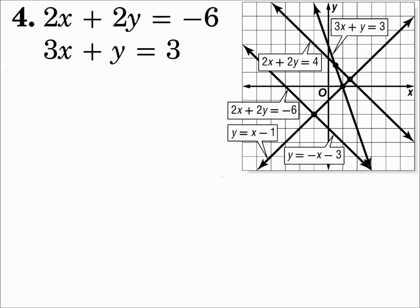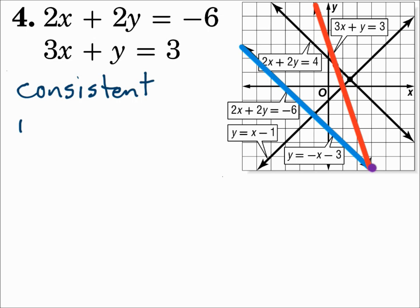Number four: 2x plus 2y equals negative 6, which is the blue line, and 3x plus y equals 3, which is the red line. Blue and red overlap to make purple right there — they intersect at one point. When a system intersects at one point, that's called consistent independent.